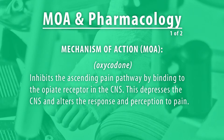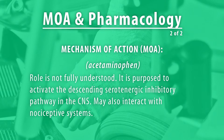Mechanism of action and pharmacology: oxycodone inhibits the ascending pain pathway by binding to the opiate receptor in the central nervous system, depressing the CNS and altering the response and perception to pain. Acetaminophen's role is not fully understood. It is proposed to activate the descending serotonergic inhibitory pathway in the CNS, and may also interact with nociceptive systems.